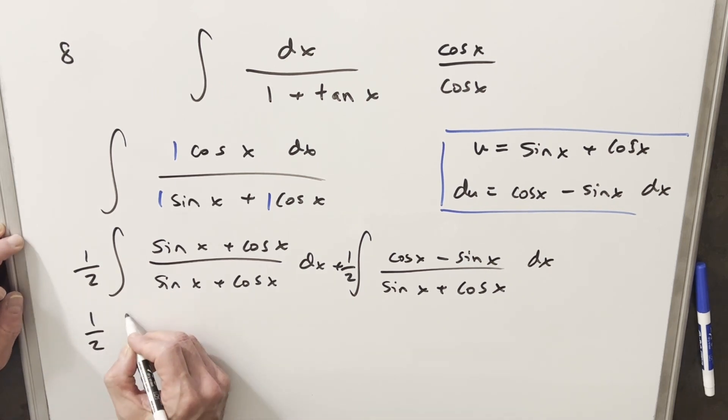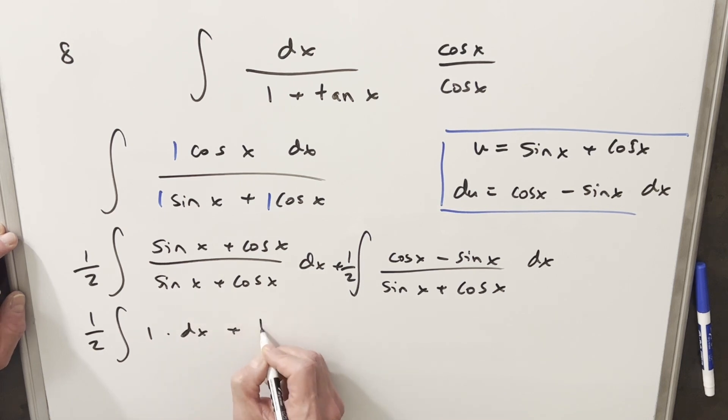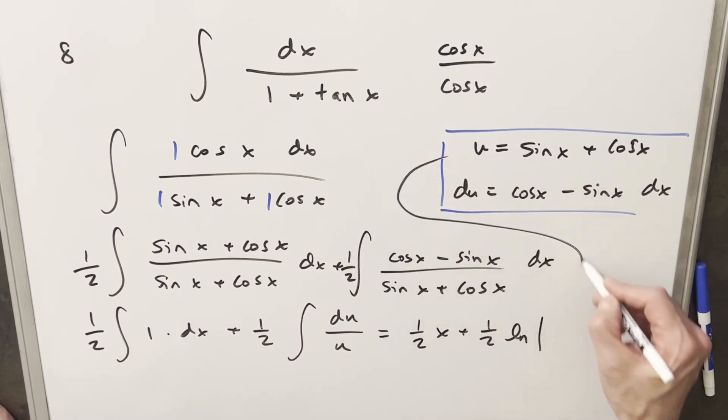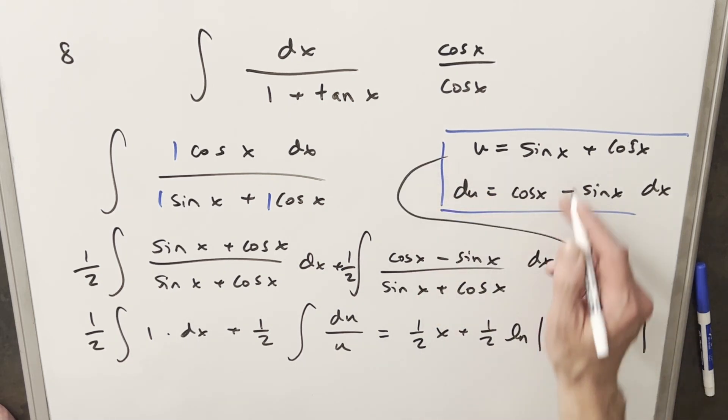Just to make this clear, this is just going to become one dx that we're integrating. And this over here, we already have our u substitution, so this is going to be just du over u. We'll integrate really quick. This is just going to be integral of one's just x. So we're going to have half x plus half natural log absolute value—but then for our u, I'm just going to back substitute all in one step and plug that in. So we have our u value, which is going to be sine x plus cos x.